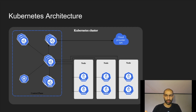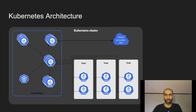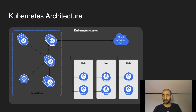Now let's look at the architecture to understand what kube-proxy is and what role it plays. In Kubernetes we have worker nodes — you see three nodes on the right — and a master node. In a high-availability Kubernetes cluster there would be multiple master nodes. The master nodes consist of the control plane, which has things like the API server, etcd, scheduler, and all that. The worker nodes have kubelet and kube-proxy.